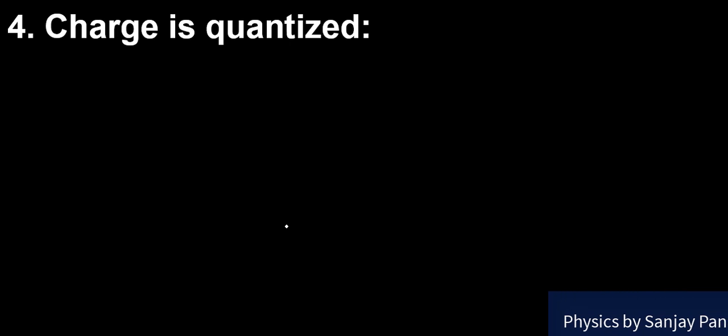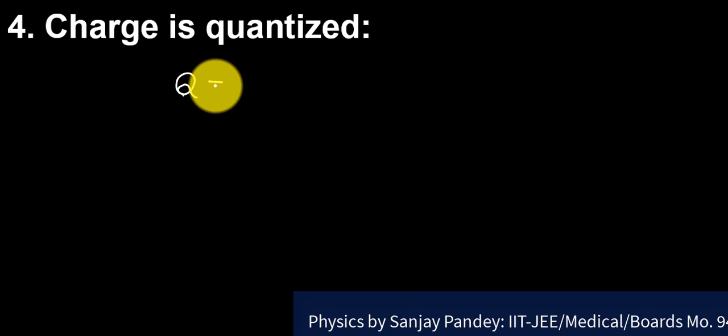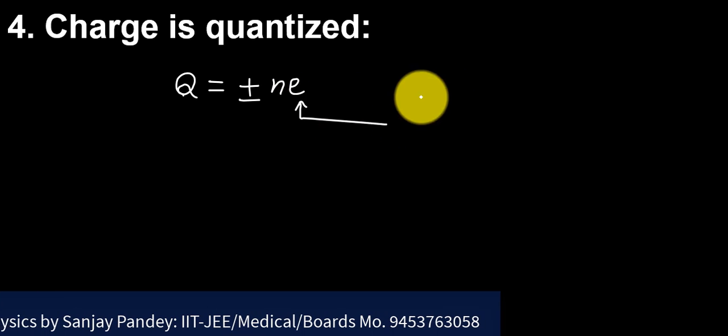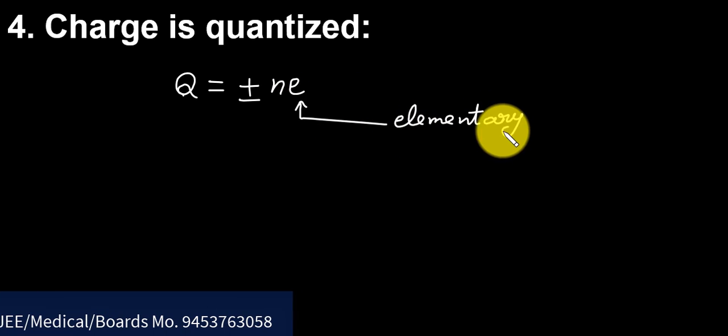Fourth property, charge is quantized. According to this, charge on a body is an integral multiple of charge on an electron. Mathematically, we can write it Q = ±Ne. Here e is the elementary charge. It is the charge on one electron.